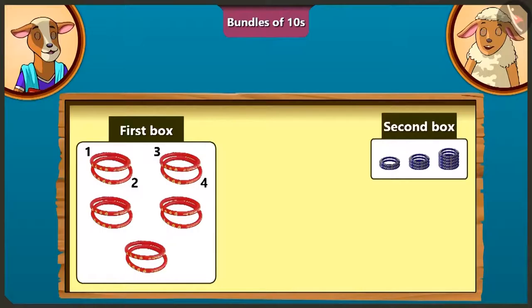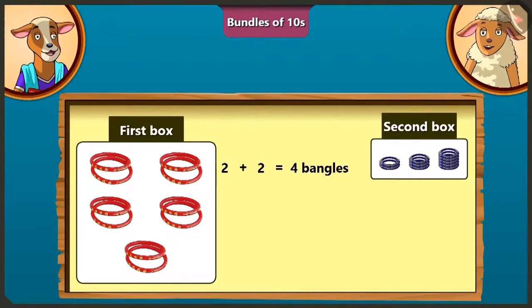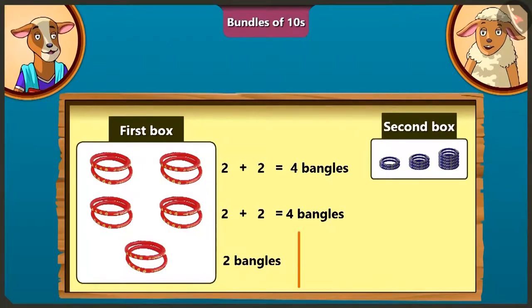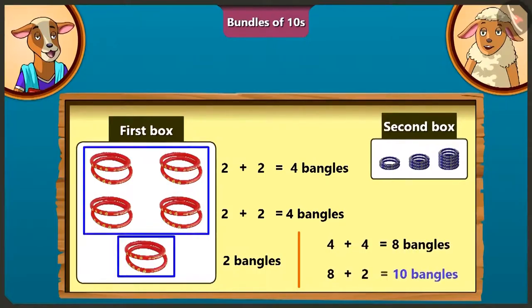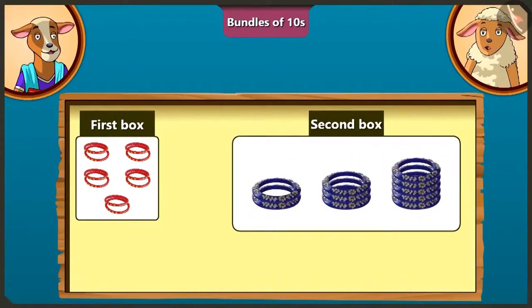Well done, Lily. Here are total two boxes of bangles. Tell me, how many bangles are there in the first box? There are one, two, three, four, five, six, seven, eight, nine and ten bangles in the first box. Lily, we do not have to count the bangles one by one like this. I will teach you. There are two — one, two — four bangles in the first row. There are also two — two, four bangles in the second row. And there are two bangles in the third line. So, we can count bangles this way: we get eight by adding four plus four, ten by adding two with the eight. So, there are ten bangles in the first box.